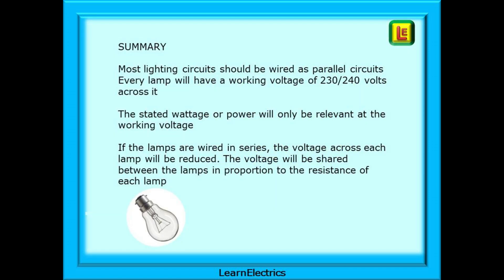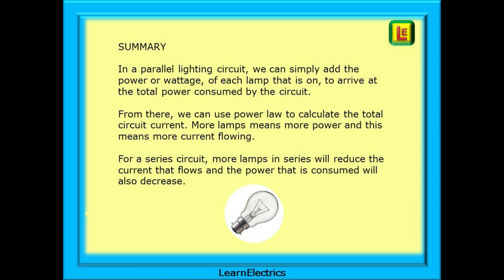In summary then, most lighting circuits should be wired as parallel circuits. Every lamp will have a working voltage of 230 or 240 volts across it. The stated wattage or power will only be relevant at the working voltage. However, if the lamps are wired in series, the voltage across each lamp will be reduced. The voltage will be shared between the lamps in proportion to the resistance of each lamp. In a parallel lighting circuit, we can simply add the power or wattage of each lamp that is on to arrive at the total power consumed by the circuit. From there, we can use power law to calculate the total circuit current. More lamps means more power, and this means more current flowing. But for a series circuit, more lamps in series will reduce the current that flows, and the power that is consumed will also decrease.